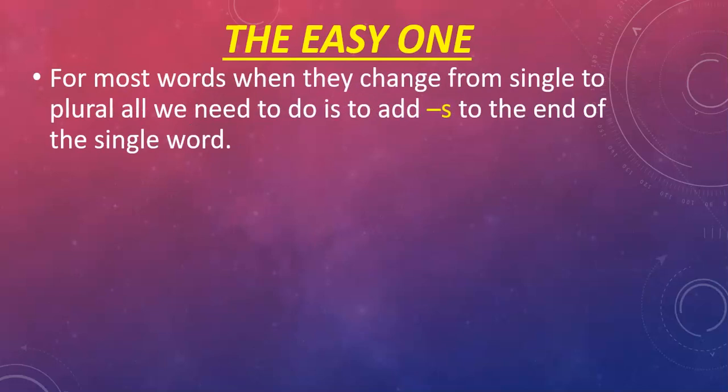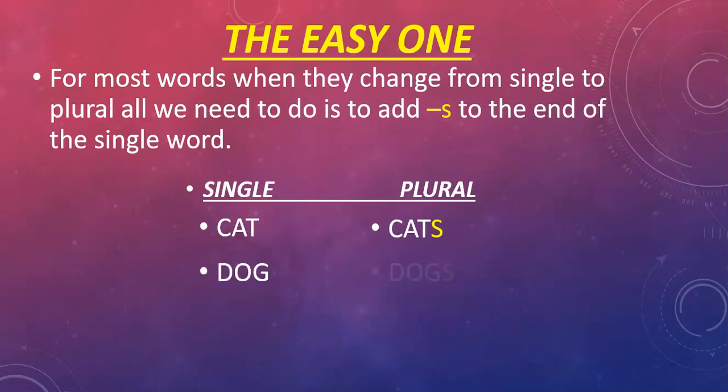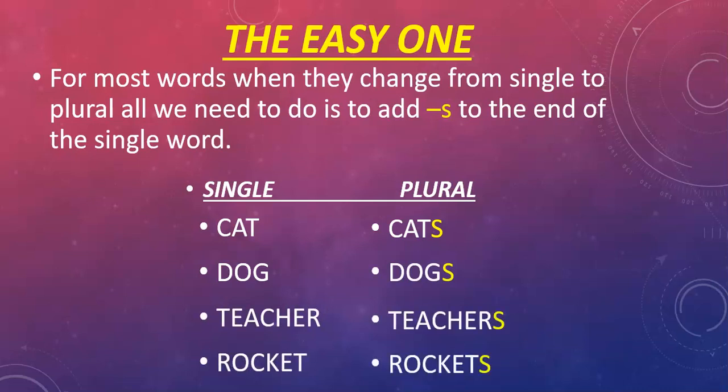Let's start with the easy one. For most words when they change from single to plural all we need to do is add an s to the end of the single word. For example, cat. One cat changing it to plural makes it cats. Dog becomes dogs. Teacher becomes teachers. Rocket becomes rockets. All of these words change from the single into the plural simply by adding s to the end of it.